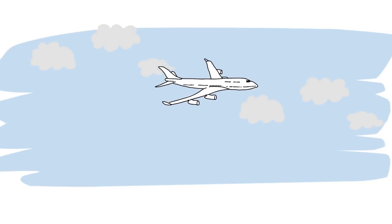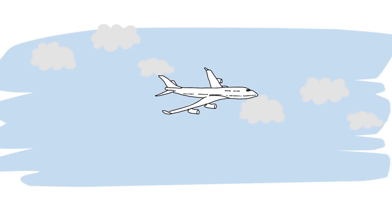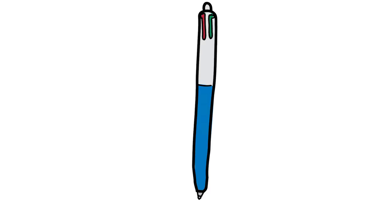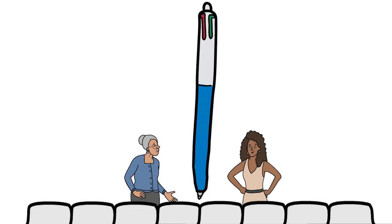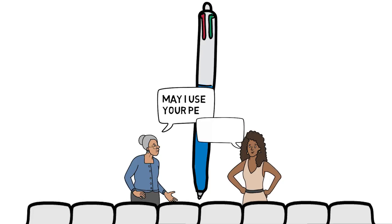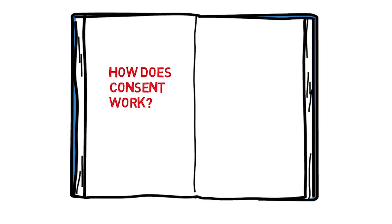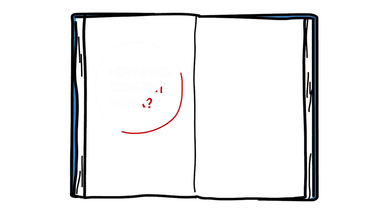Suppose you're on a plane. The person next to you isn't allowed to just take your pen. But if she asks to borrow it to fill in the immigration form, and you give your consent, then she is now permitted to use it. But how does consent work? What would you need to do in order to make it okay for her to take the pen?